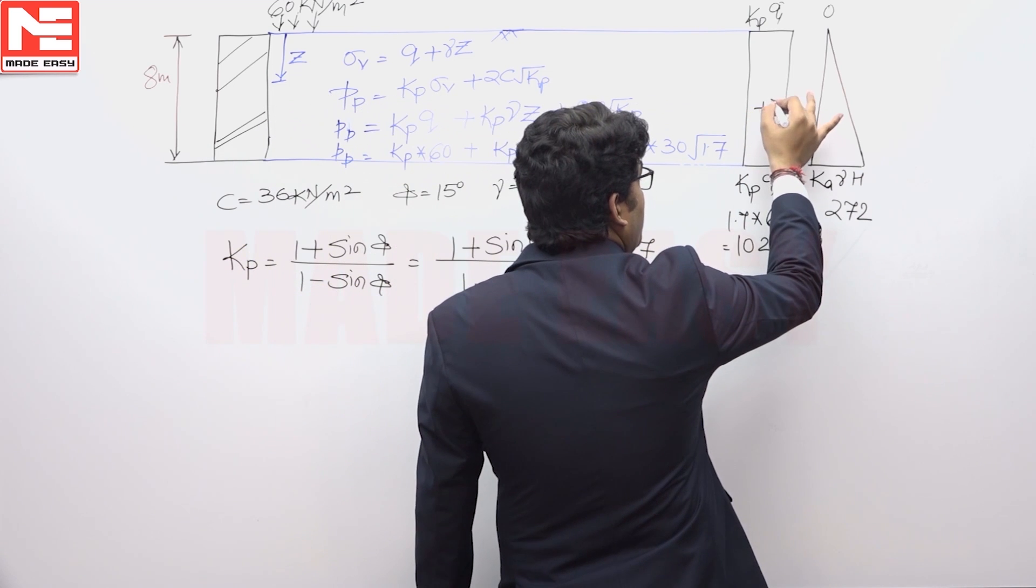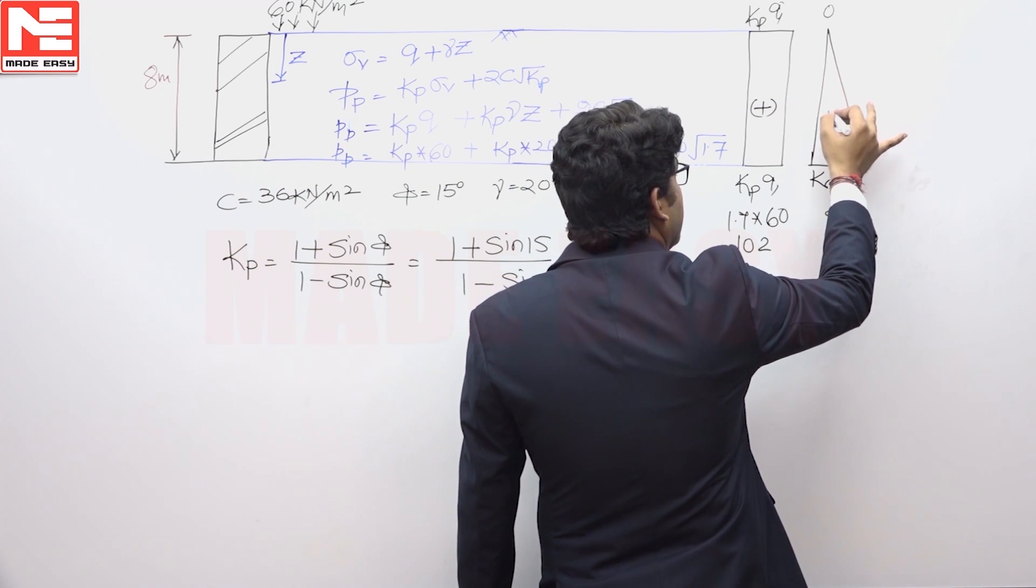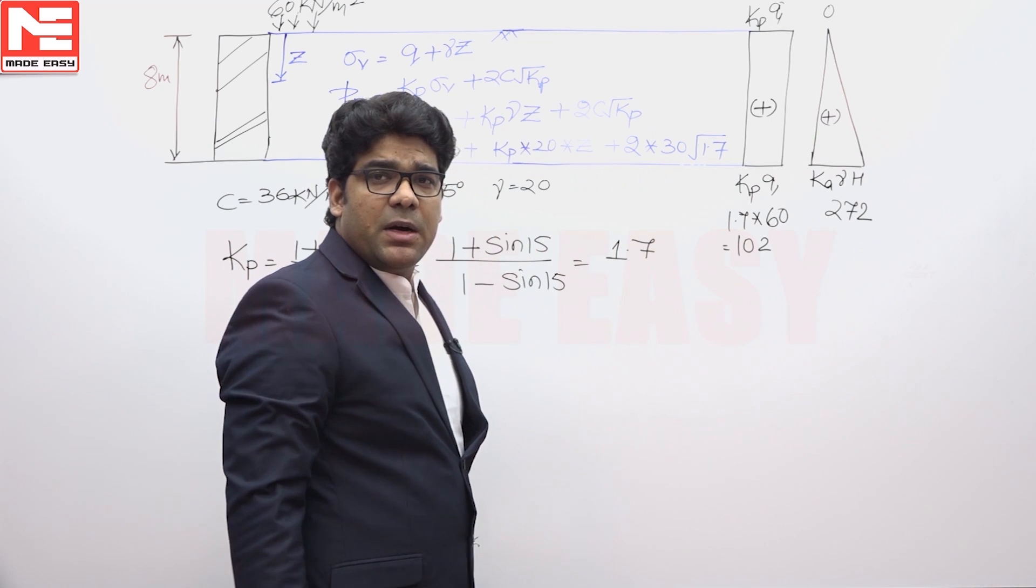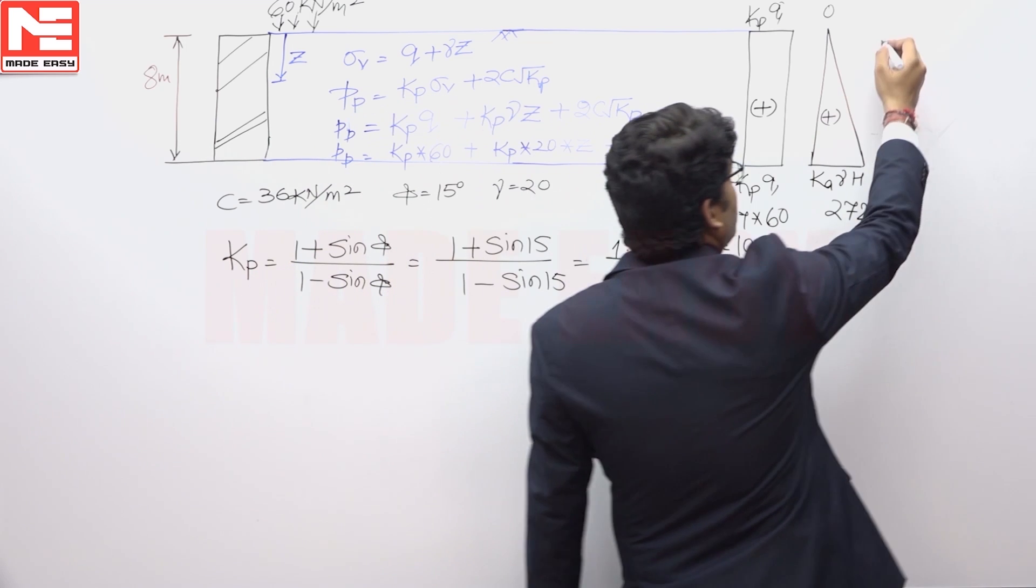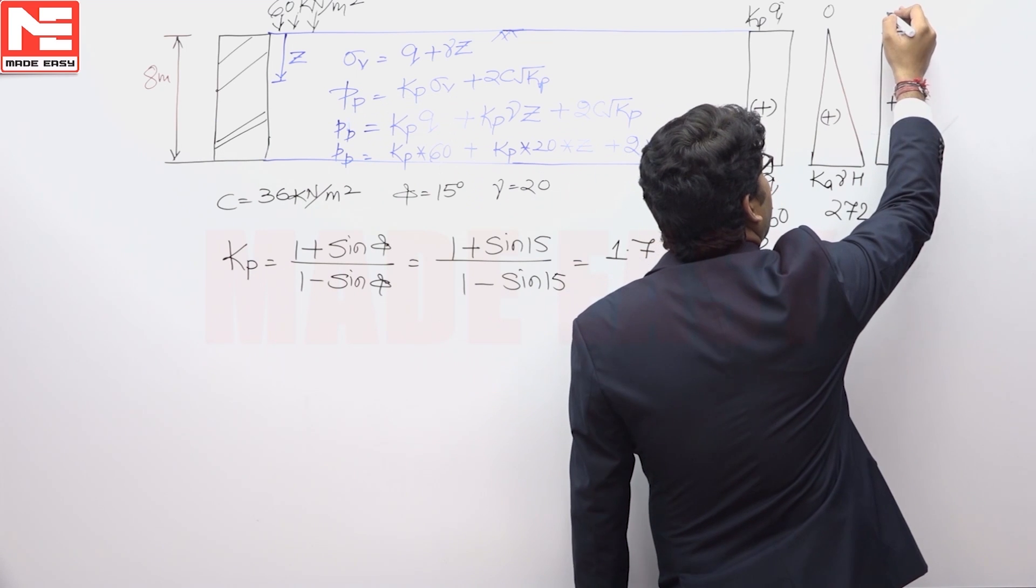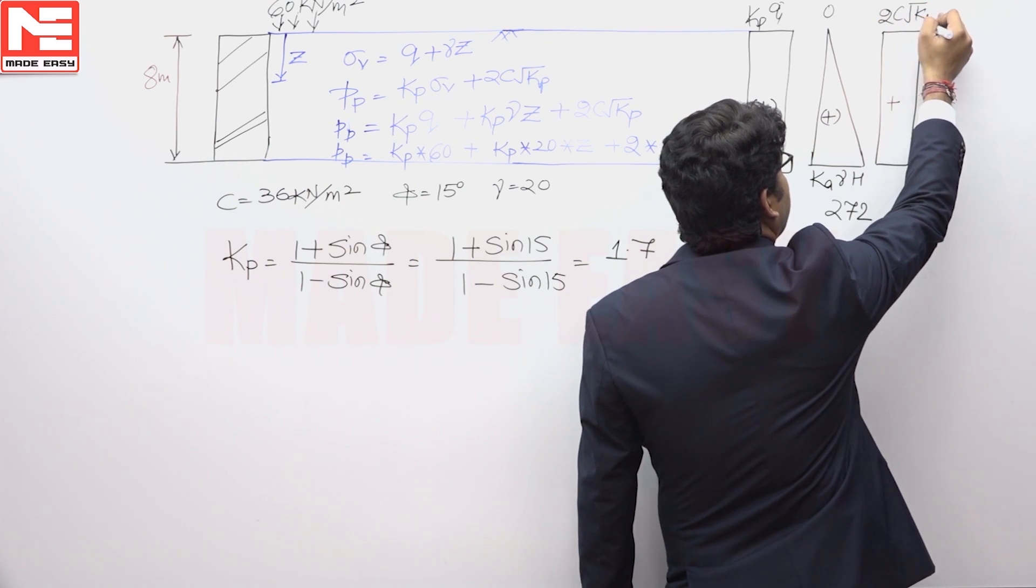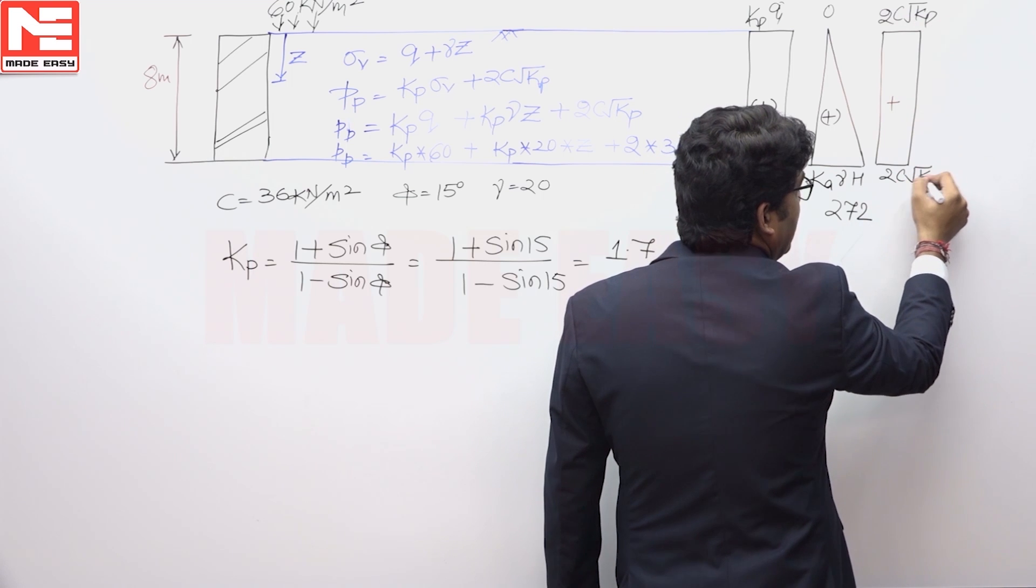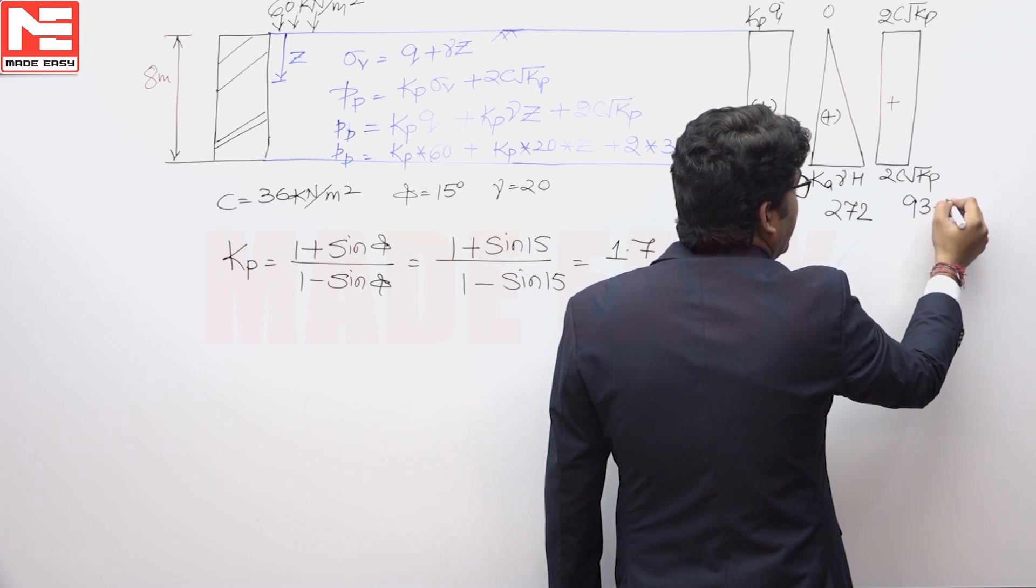Next one, these two, Kq and K gamma z is positive, that is compressive in nature, but this 2c root Kp is also in compressive nature and that is plus and this value is equivalent to 2c root Kp and this 2c root Kp is equivalent to 93.88.